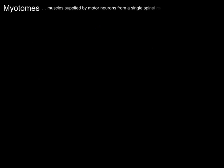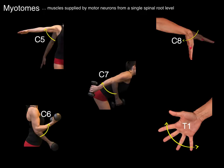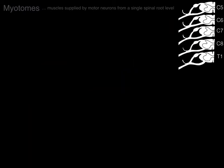A myotome is muscles supplied by motor neurons from a single spinal root level. Here are the C5, C6, C7, C8, and T1 levels and the actions associated with those myotomes.